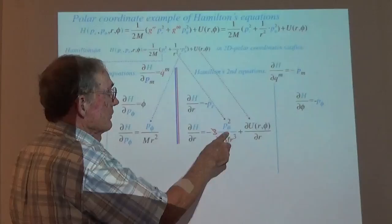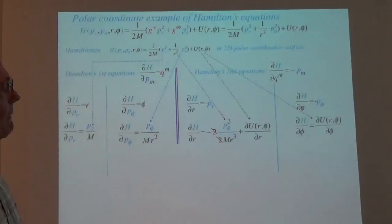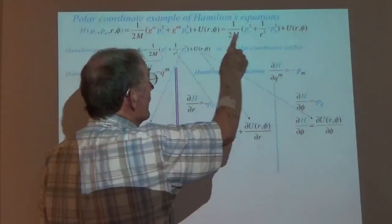This leaves me with a rather ugly term: P_phi-squared over M R-cubed. The same thing happens on the angle — with respect to the angle phi, since there are no phi's anywhere in this thing except maybe in the potential, that's all you're going to get is the phi derivative of the potential.